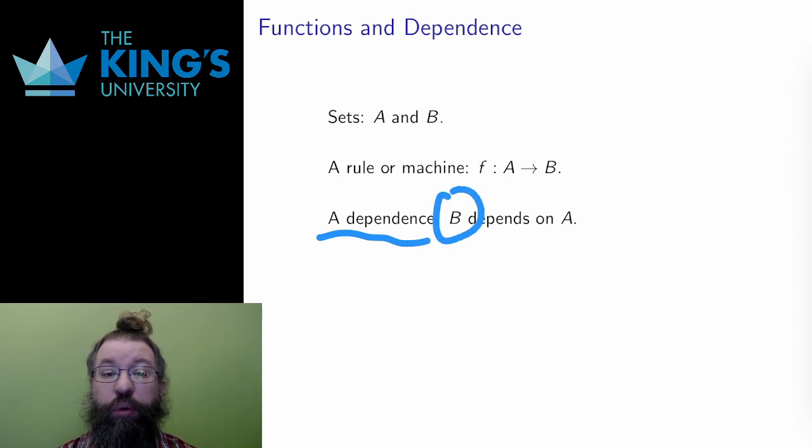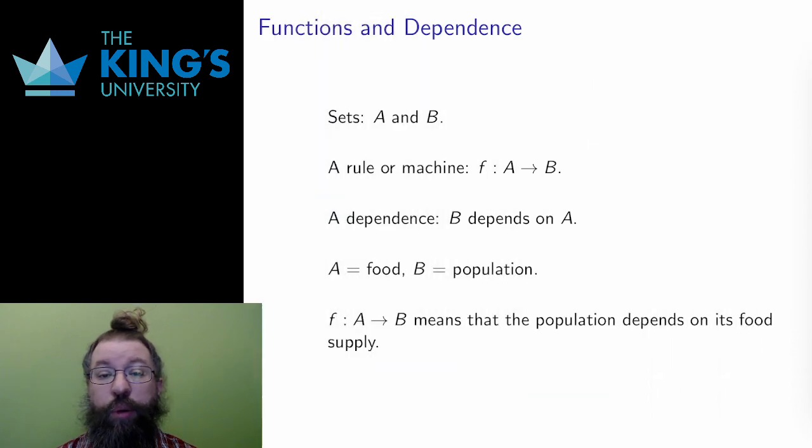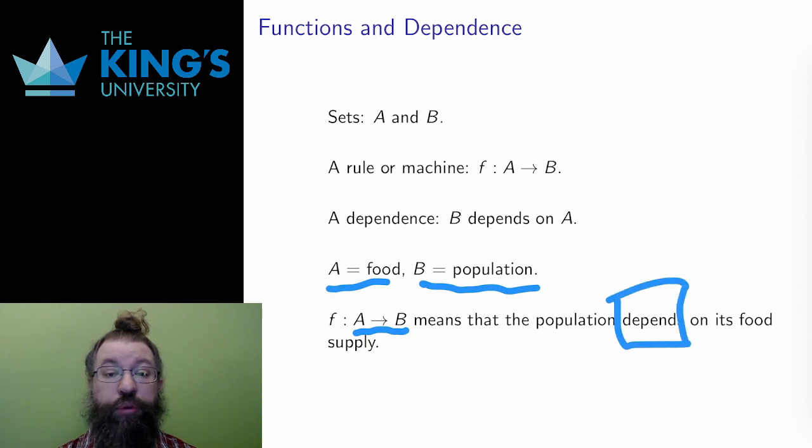Consider an animal population. If A is the number that measures the food supply, and B is the number that measures the population, then a function f from A to B measures the effect of the food supply on the population. The population depends on the food supply, and presumably more food will lead to more population growth, and therefore more animals.